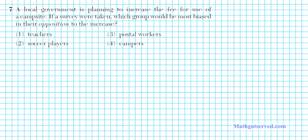Alright let's take a look at problem number seven. It says a local government is planning to increase the fee for use of a campsite. So basically the users of the campsite will pay more money for the use of the campsite. It says if a survey were taken which group would be most biased in their opposition to the increase. So the people that basically pay for the campsite will not want to have the fees increase because it's taking more of your money. So the question is out of the options one to four which of these people or which groups of people here make use of the campsite?